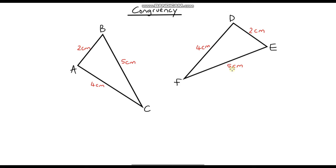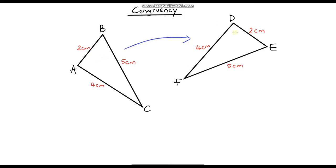Hello and welcome to a video on congruency. So what do we mean by congruency, or things that are congruent? It relates to geometry and it's all to do with things being the same. I've got two triangles here. If I were to take the triangle on the left and rotate it and move it in this direction, it could fit directly on top of this triangle. These two triangles are identical — one is just a rotated version of the other. So we would say that these two triangles are congruent.